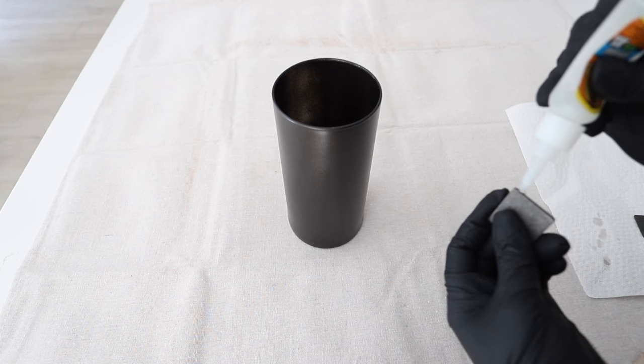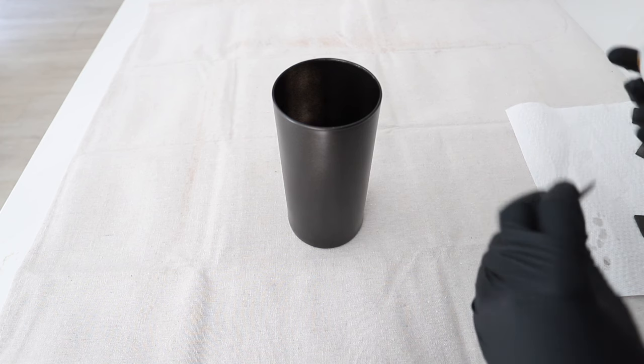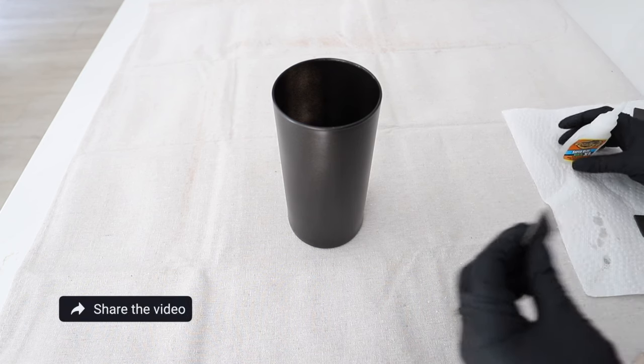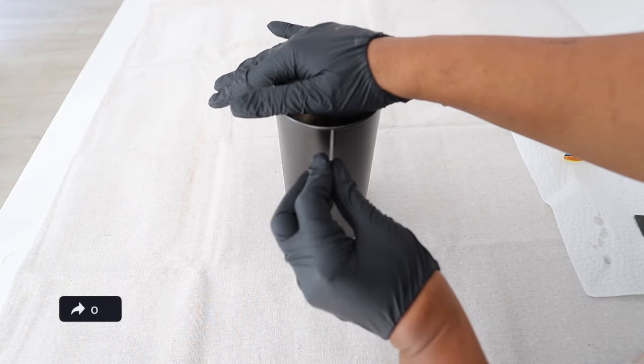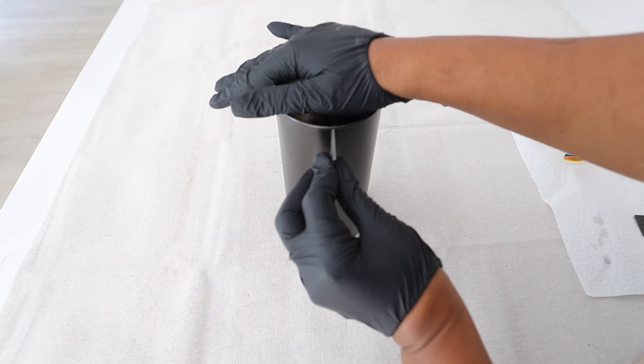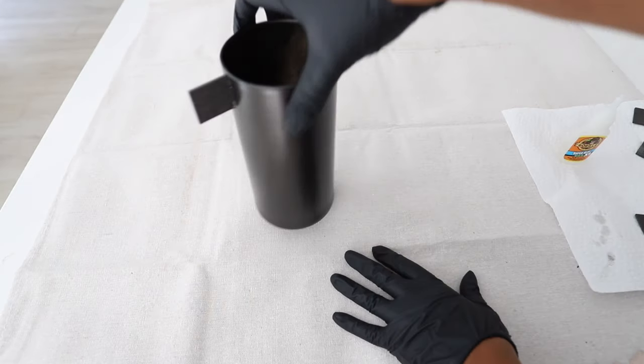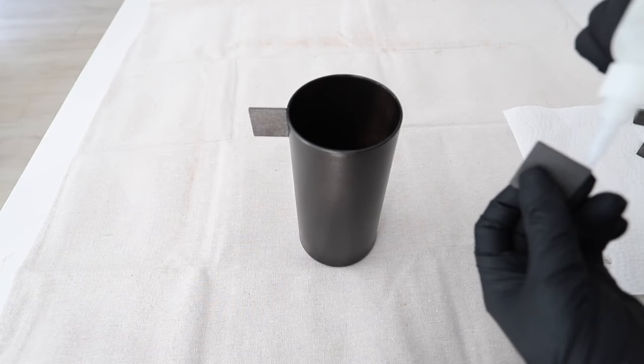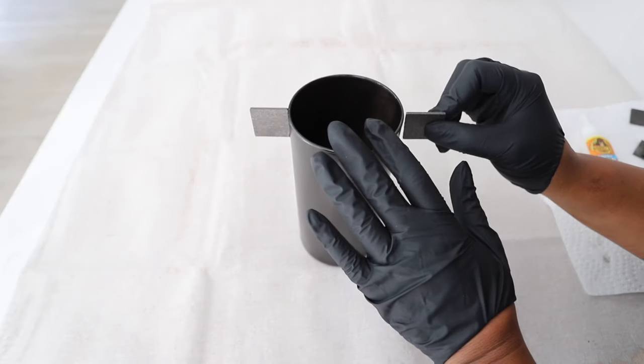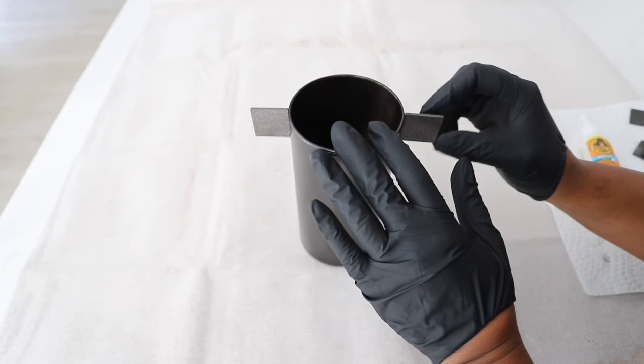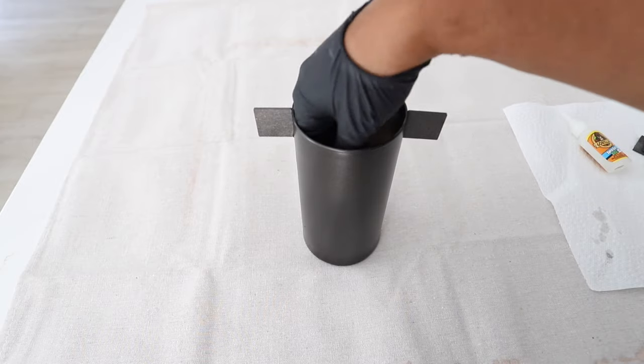Now let's attach the squares to the vase. This time, I'm going to try Gorilla Super Glue to see if it will hold the squares up quickly. I'm going to show this in real time so you can see how long it takes. Did you see that? It did not take long at all. I decided to glue the squares around the top of the vase. I tried to space them out equally by first placing the squares opposite of each other like this.